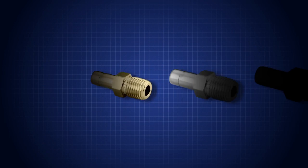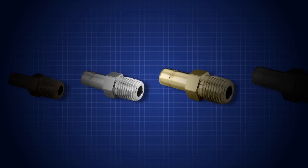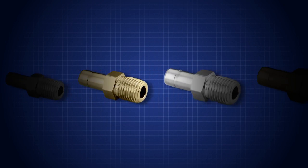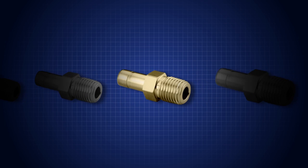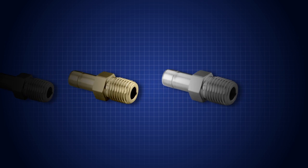For one-sixteenth, one-eighth, and three-sixteenth inch, and two, three, and four millimeter tube fittings, tighten the nut three-quarters turn to the three o'clock position.